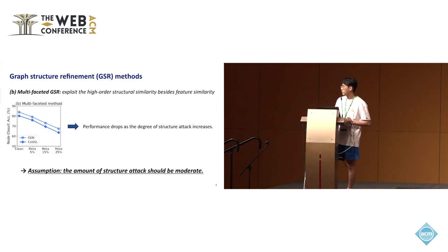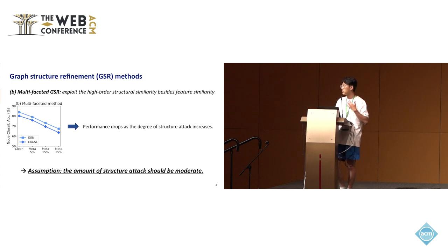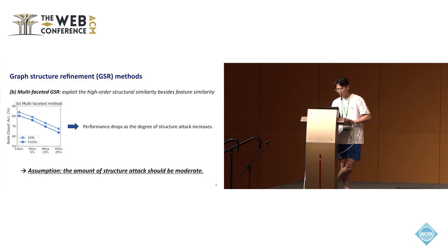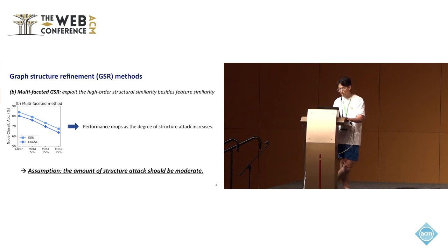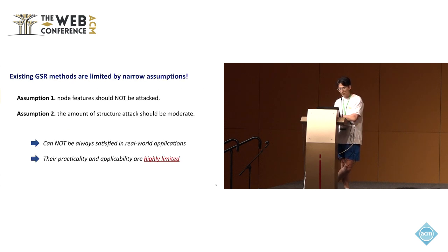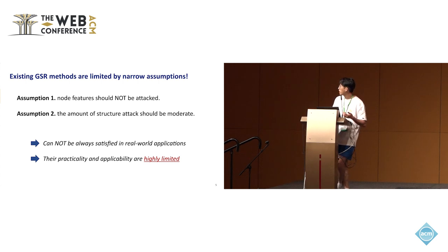To mitigate such limitations of the feature-based GSR method, the multi-phased GSR method exploits higher structural similarity in addition to feature similarity to reduce the reliance on feature information. However, we also discovered that the performance of the multi-phased method drops significantly as the degree of structure attack increases. This means they are also built on the assumption that the amount of structure attack should be moderate. These two narrow assumptions cannot always be satisfied in real-world scenarios, so their practicality and applicability are highly limited.